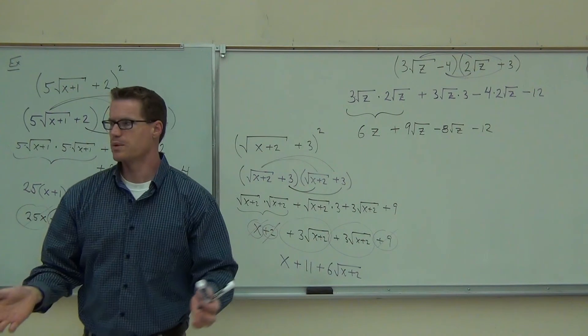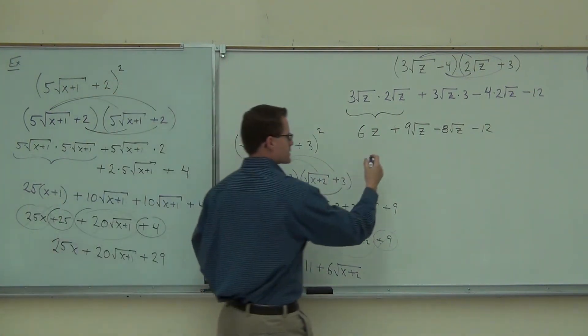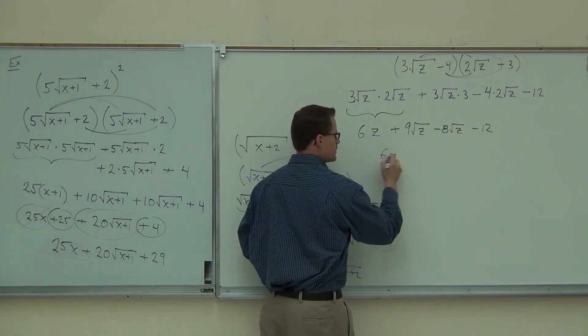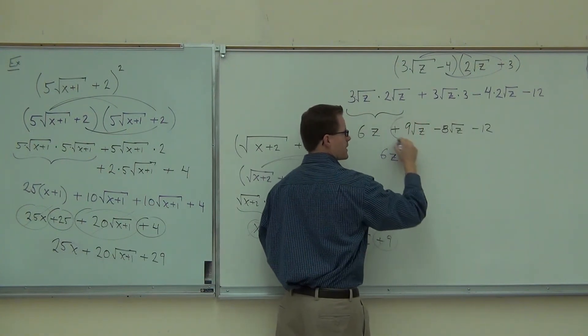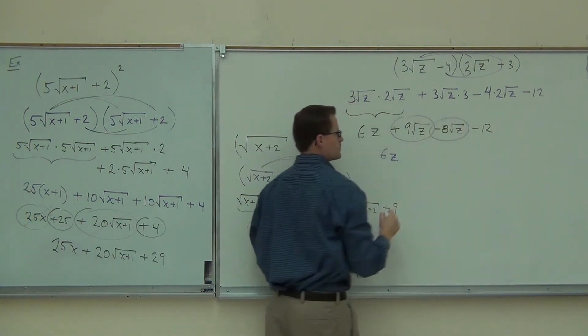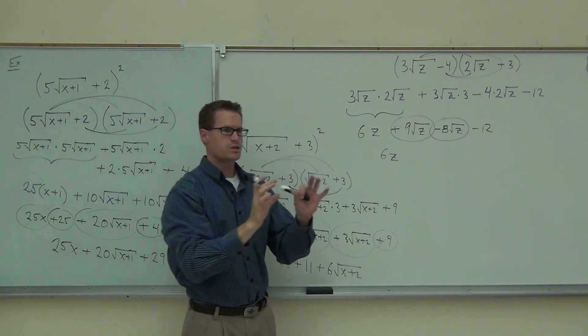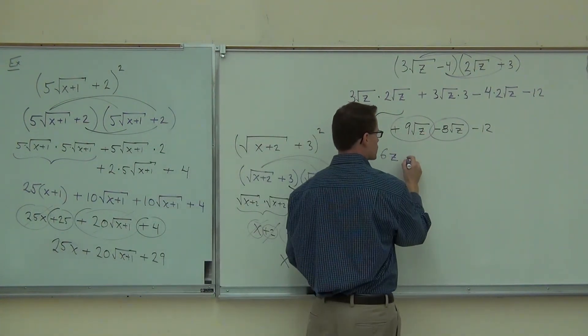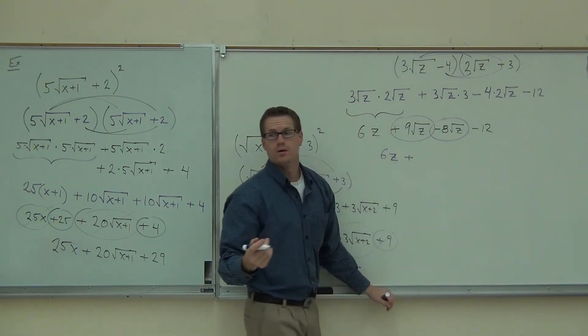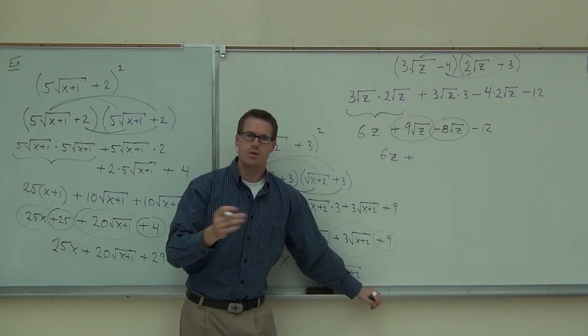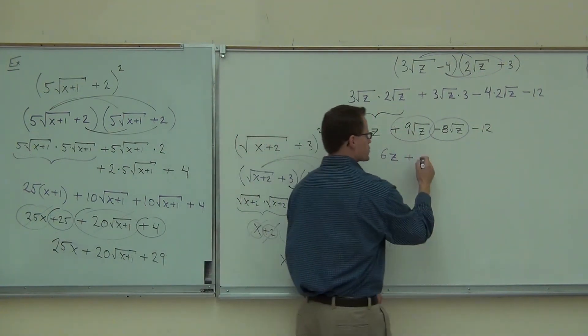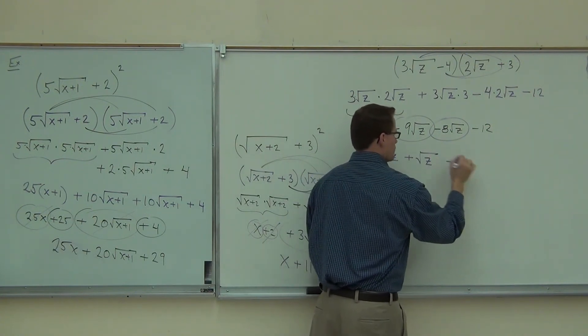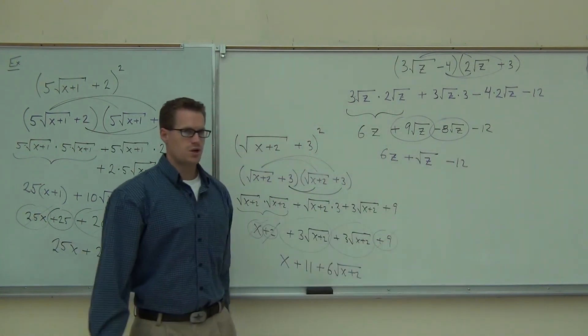We're going to clean up whatever we can. In our case here, we have a 6z. How much is this going to be when I combine my like radicals? Plus root z. Good. Because we know a root z and a root z. Those are like radicals. Same root, same radicand. 9 minus 8 is 1. You're not going to put the 1, though. It's like writing x. You don't write 1x. You just write x. Here you just write square root of z. Minus 12. That's as far as you can go.